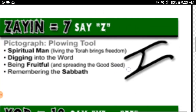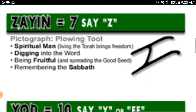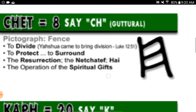Zayin equals seven, say 'Z.' Pictograph: plowing tool. Spiritual man living the Torah, brings freedom. Digging into the word, being fruitful and spreading the good seed. Remembering the Shabbat.